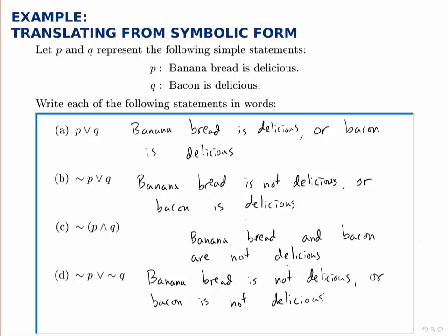One thing to notice at the end of this problem is that parts C and D are actually equivalent statements. That may be difficult to see with the way that they're written right now, but in order to negate the statement that both of them are delicious, all that we need to prove is that one of them at least is NOT delicious, either banana bread or bacon. So saying NOT (P AND Q) is the same as NOT P OR NOT Q. This will come back later when we talk about DeMorgan's Laws and we'll notice that those two statements are equivalent in general, but here we can see an early example of this.